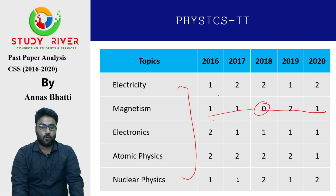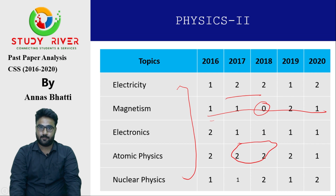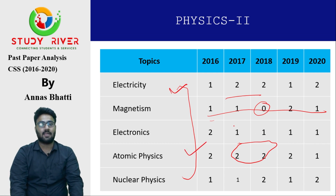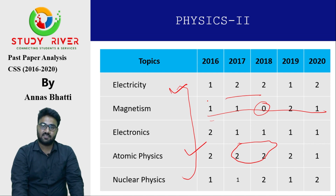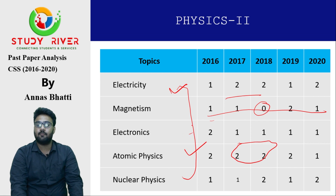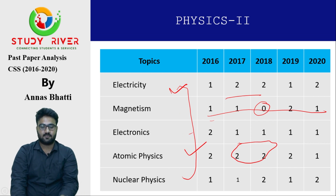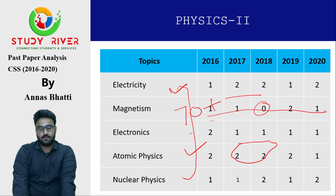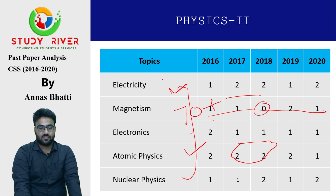Electricity and atomic physics are the most favorite areas of the examiner. Because you can easily score again 70 plus marks in the CSS exam.